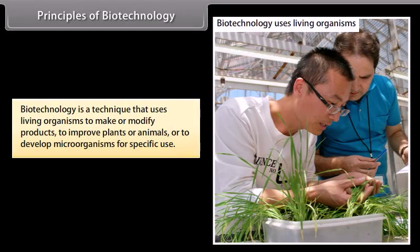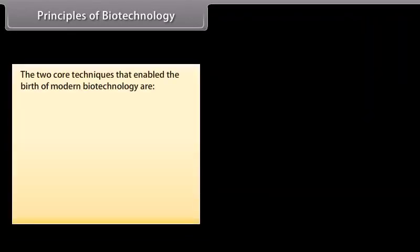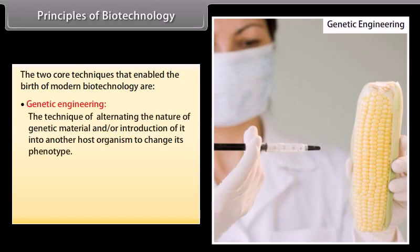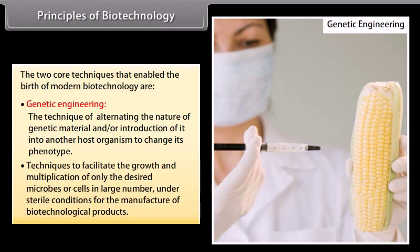Principles of biotechnology. Biotechnology is a technique that uses living organisms to make or modify products, to improve plants or animals, or to develop microorganisms for specific use. The two core techniques that enable the birth of modern biotechnology are genetic engineering — the technique of altering the nature of genetic material and/or introduction of it into another host organism to change its phenotype — and techniques to facilitate the growth and multiplication of only the desired microbes or cells in large number under sterile conditions for the manufacture of biotechnological products.